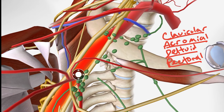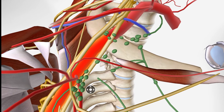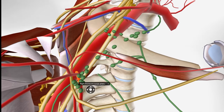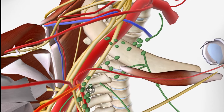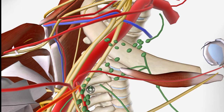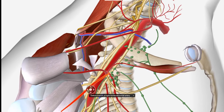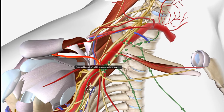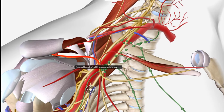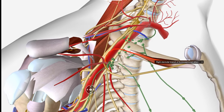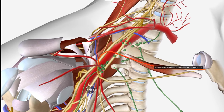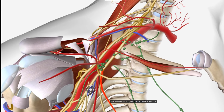Here's the thoracoacromial trunk on the model. We can see all the different branches: here's the deltoid branch, here's the acromial branch, here's the pectoral branch, and there's the clavicular branch. So those are the four different branches coming off the thoracoacromial trunk.